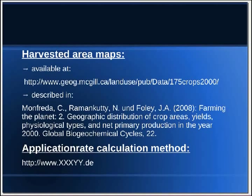In this tutorial, I explained how to generate GIS maps showing the applied insecticide amount in agriculture. The described method should give an example of how to create these maps, but can also be used for other substances like fertilizers or other agrochemicals. You can contact me if you have questions about this tutorial or the described method.